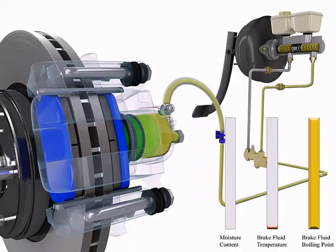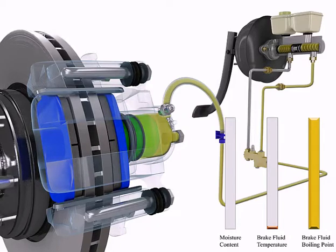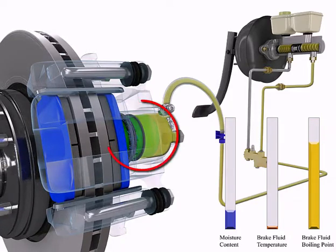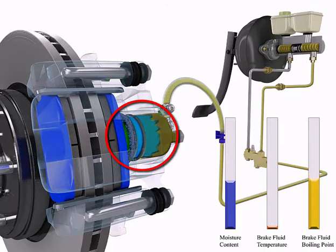Brake fluid is hygroscopic, meaning it absorbs moisture. Over an extended period of time, it's possible for moisture to enter the brake system through rubber hoses and seals.